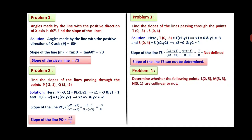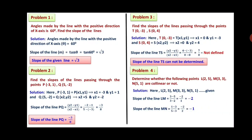Problem 4: Determine whether L(2, 5), M(3, 3) and N(5, 1) are collinear. Slope of line LM = (3 − 5)/(3 − 2) = −2/1 = −2. Slope of line MN = (1 − 3)/(5 − 3) = −2/2 = −1. Since slope of LM (−2) ≠ slope of MN (−1), the slopes are not equal. Therefore lines LM and MN are not parallel, and points L, M and N are not collinear.